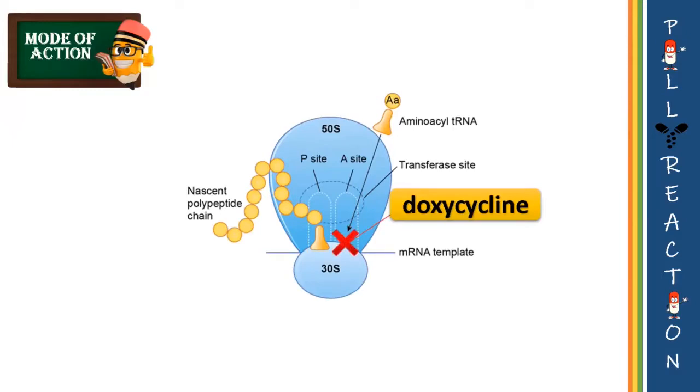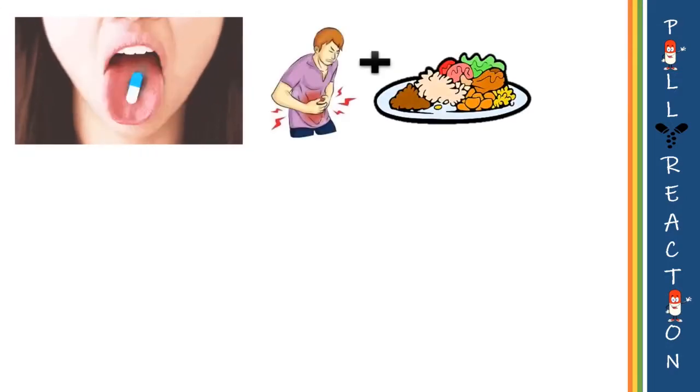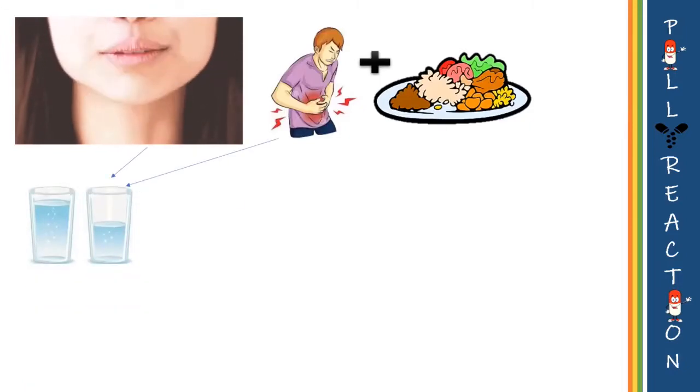It is usually taken by mouth with food when the stomach is upset, or without food, twice a day. Taking doxycycline with 8 ounces of water is usually recommended, which roughly accounts for 250 ml or simply one and a half glasses of water, by sitting in an upright position.